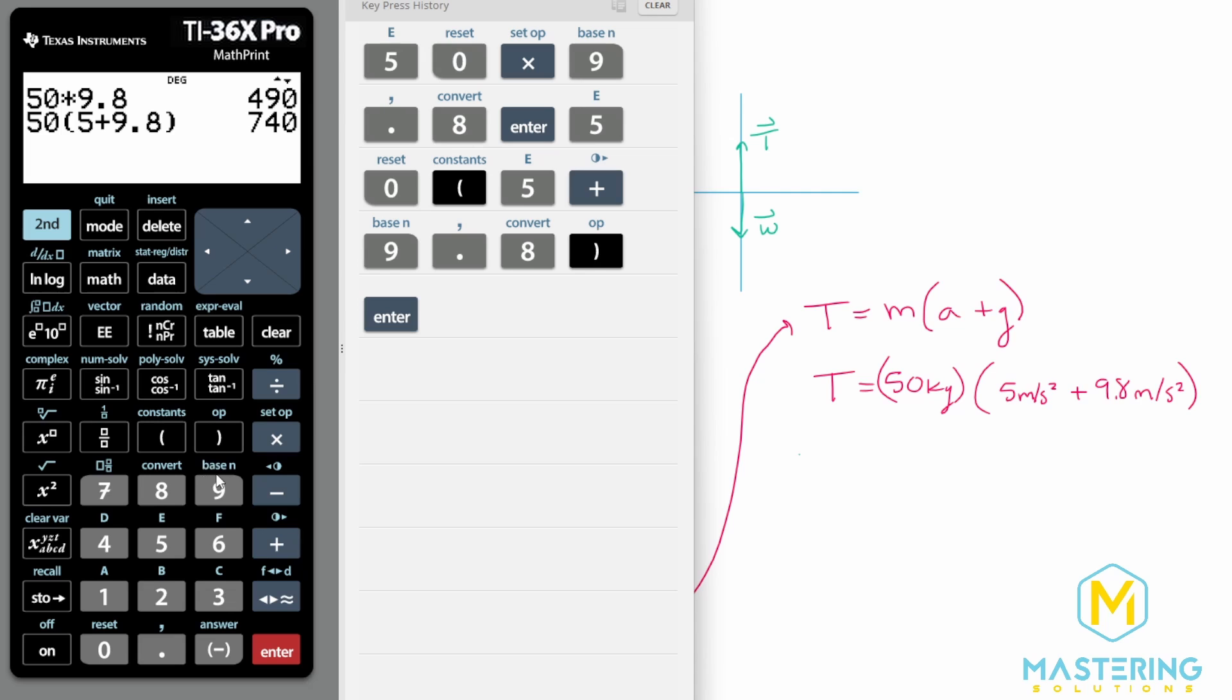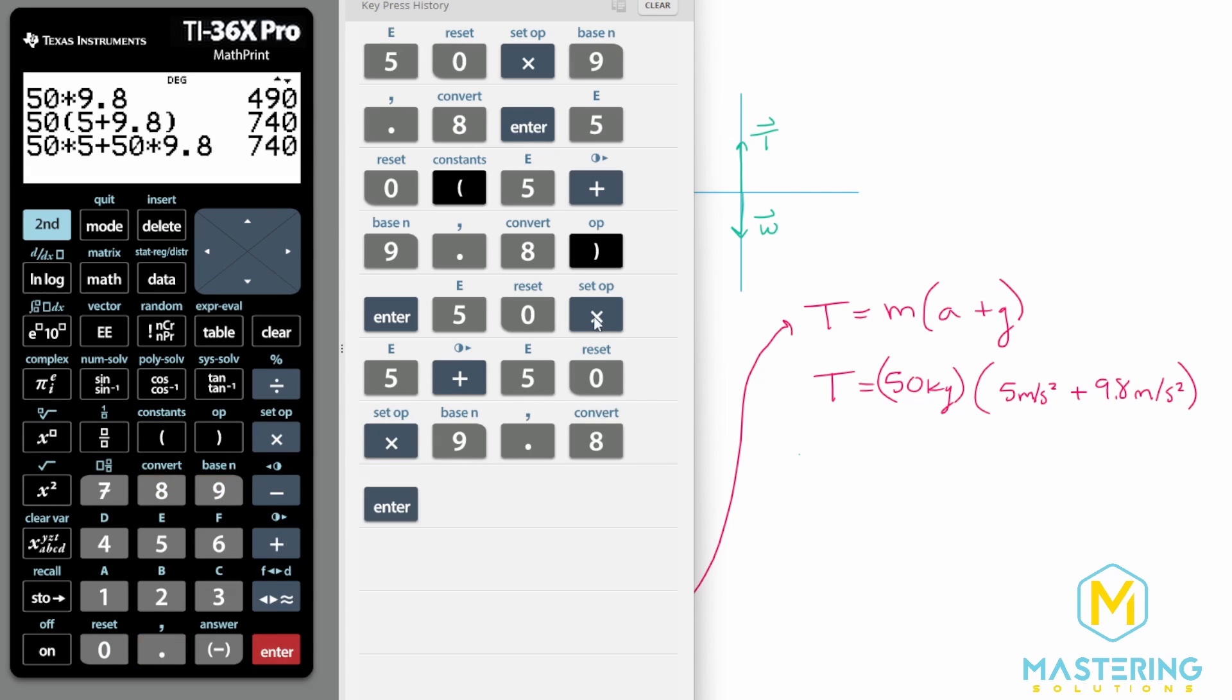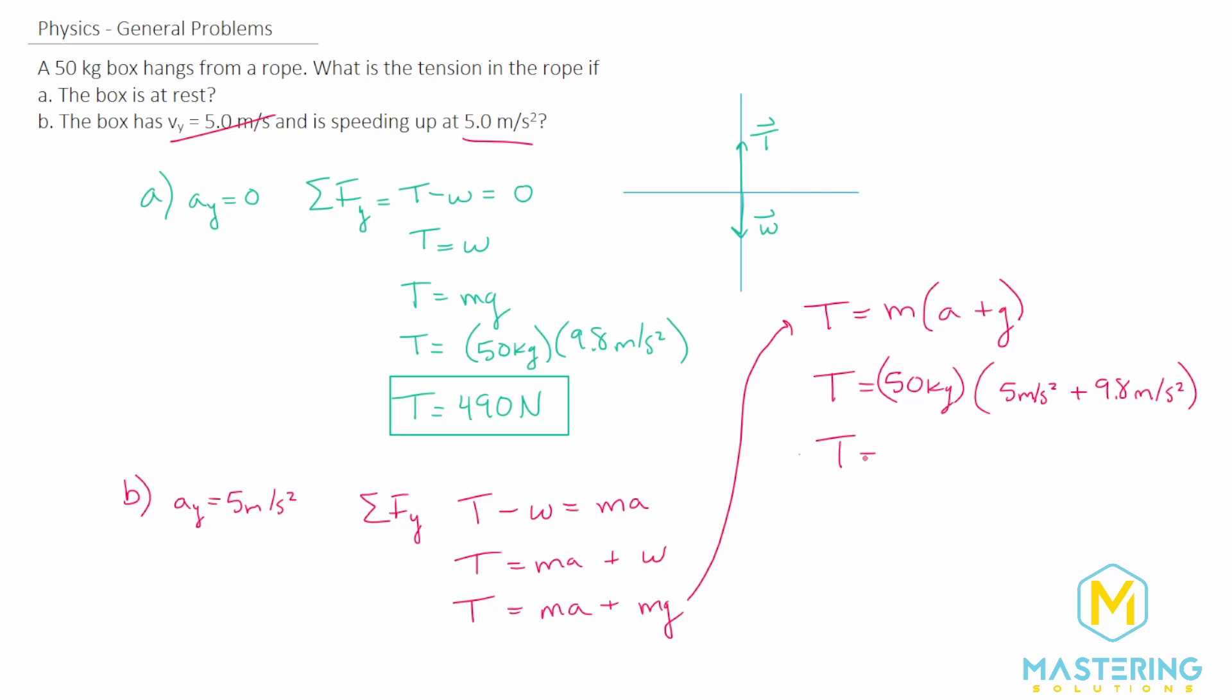And we have 50 times 5 plus 9.8. And then just to show you what I'm talking about, we could do 50 times 5 plus 50 times 9.8, and we have the exact same answer, 740. So the tension when it's accelerating is 740 newtons.